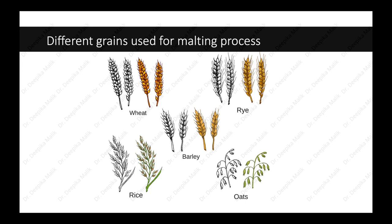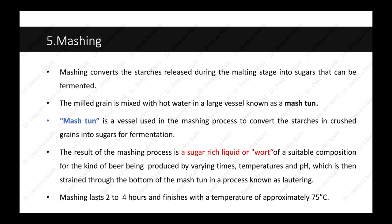Wheat, rye, barley, rice, and oats are different grains that can be used for beer production. After obtaining the milled grains, the next step is mashing. Mashing converts the starches released during malting into sugars that can be fermented. The milled grains are treated with hot water in a large vessel known as a mash tun, where the conversion of starches into fermentable sugars takes place. The result is a sugar-rich liquid called wort of suitable composition for the kind of beer being produced. Mashing lasts two to four hours and finishes at approximately 75 degrees Celsius.